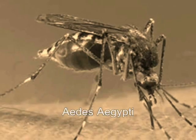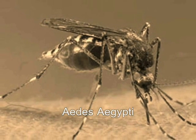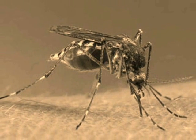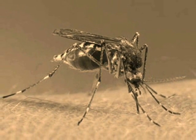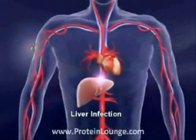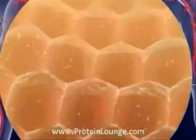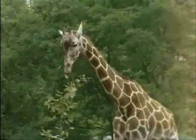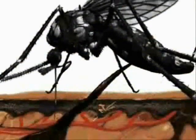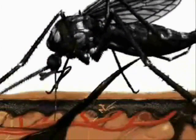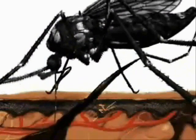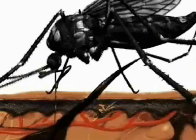The most common Aedes species, the Aedes aegypti, is the main culprit in spreading the virus. It is a domestic, day-biting mosquito that prefers to feed on humans. People living in dengue endemic areas can have more than one dengue infection during their lifetime, and experts believe that sequential infection increases the risk of developing dengue haemorrhagic fever.